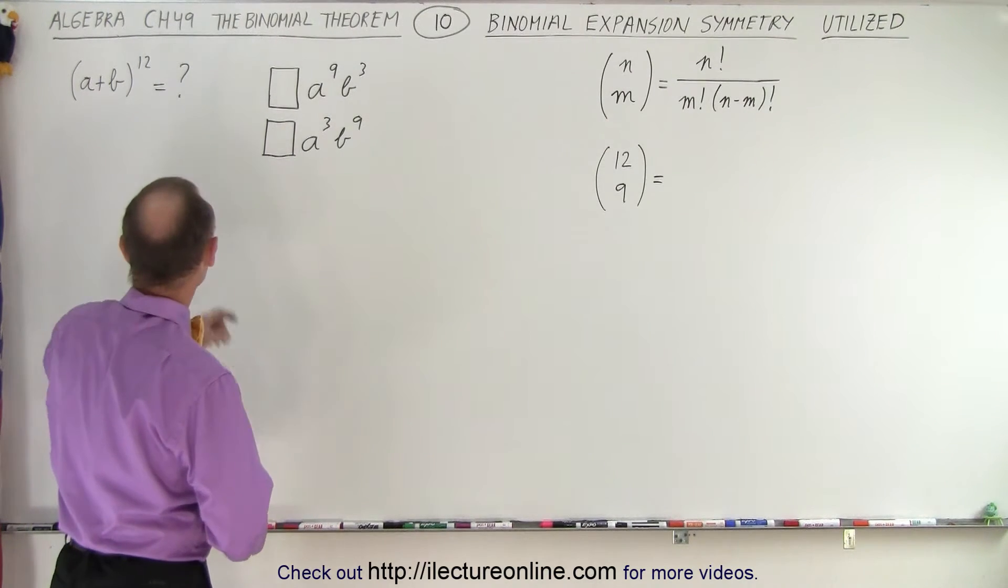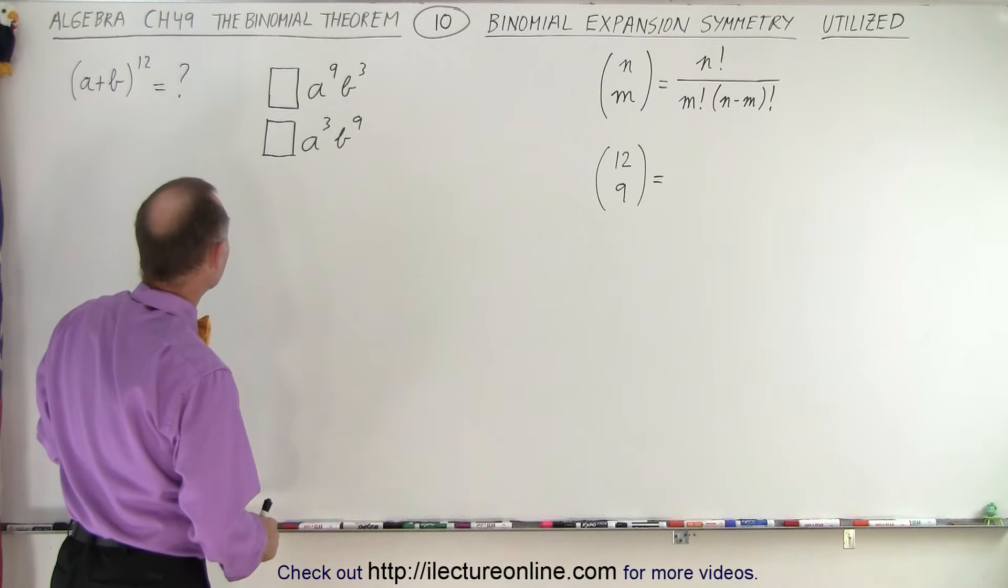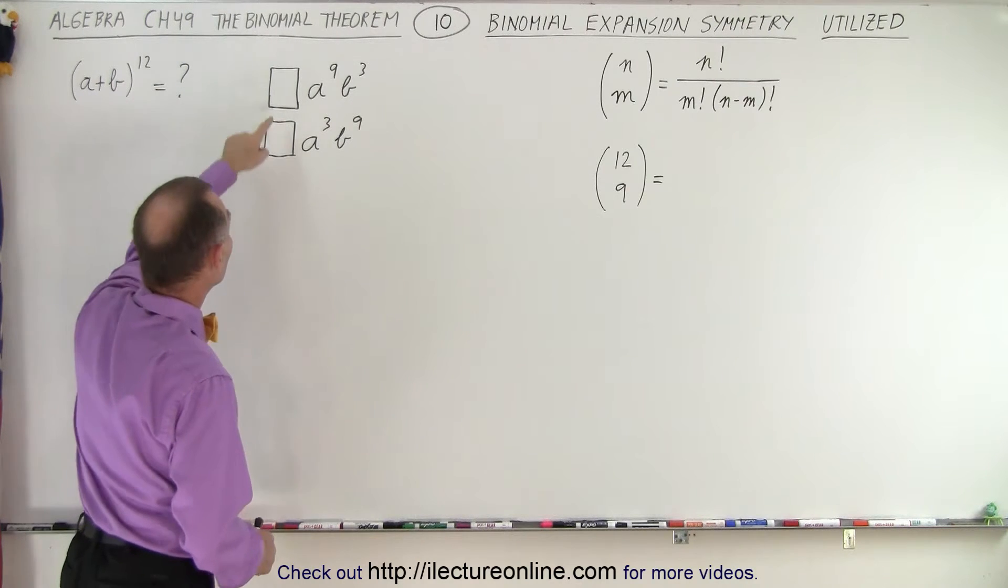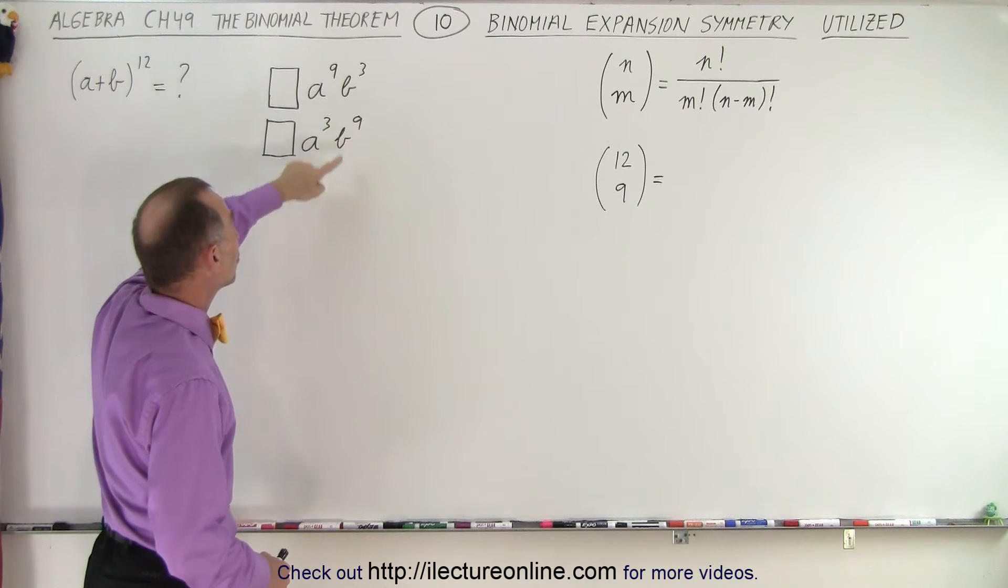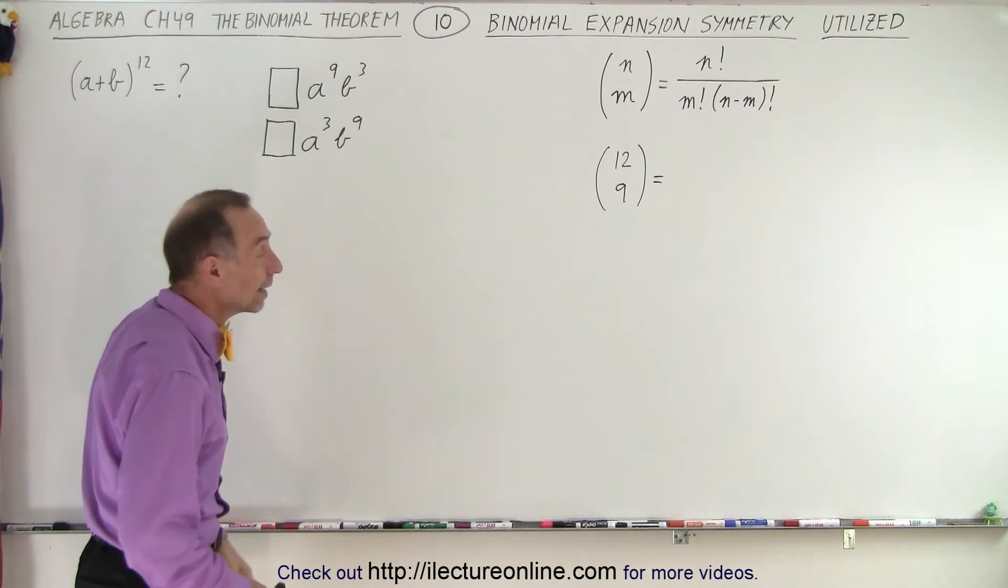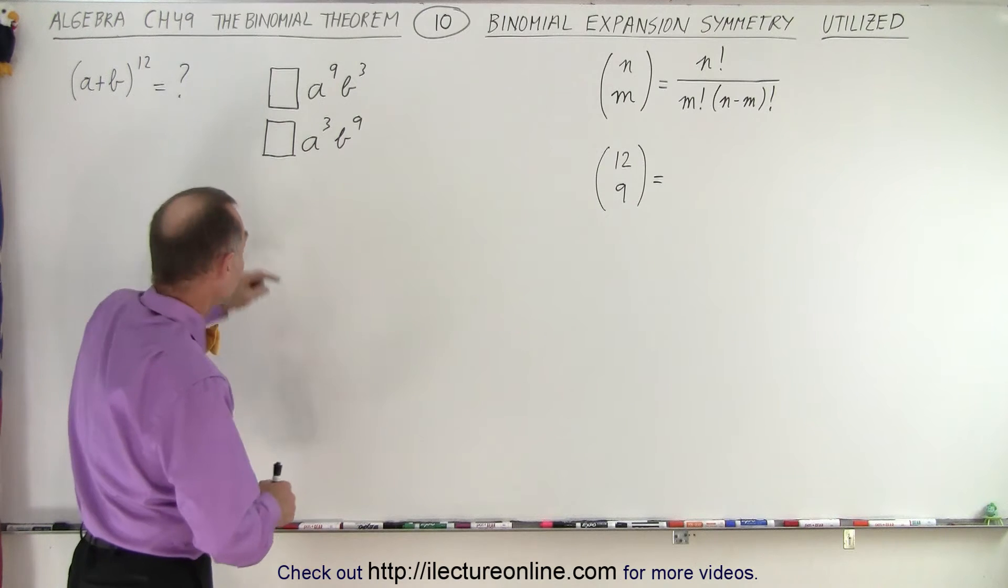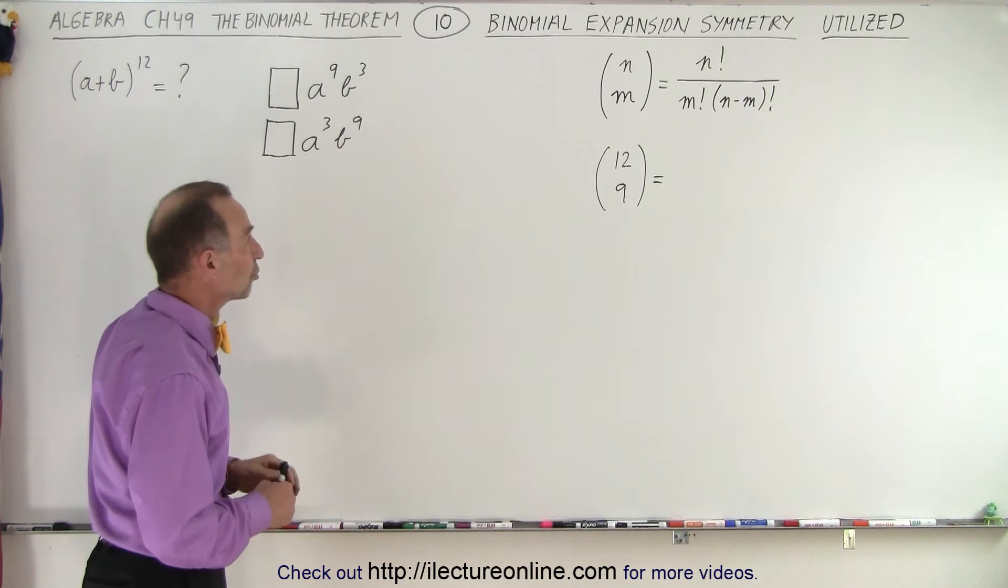So let's say we have a plus b raised to the 12th power and we're trying to find the coefficients, the numerical coefficients of the term a to the 9 b cubed or a to the 3rd b to the 9. Now it turns out the numerical coefficients will be exactly the same because of the symmetry.